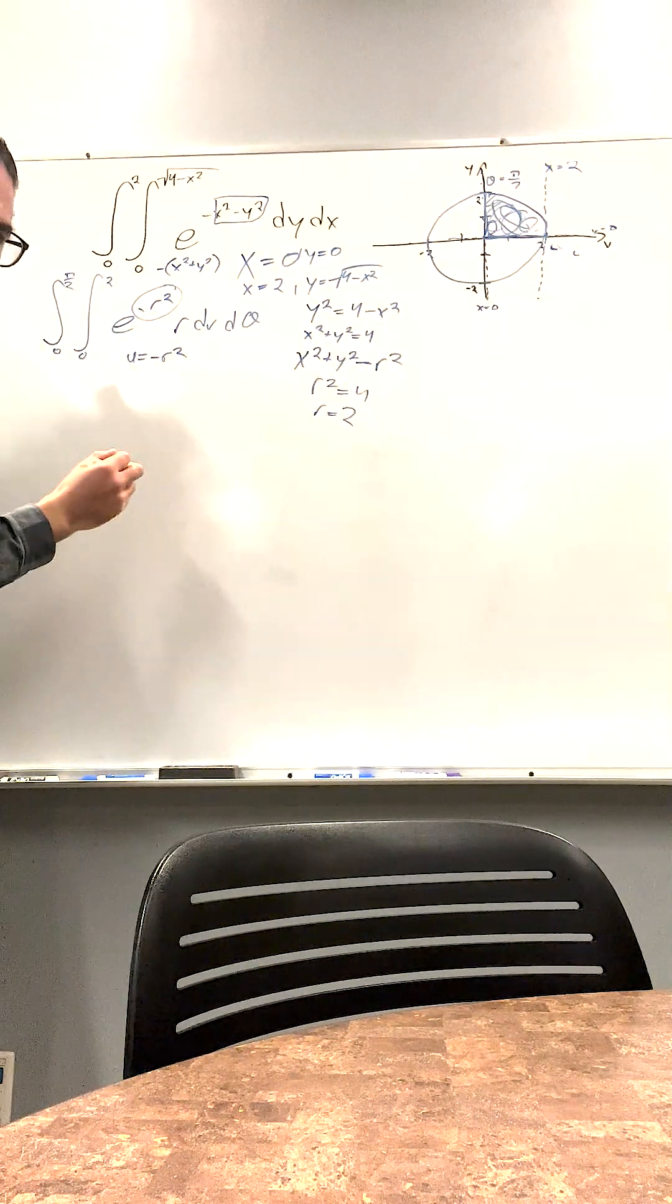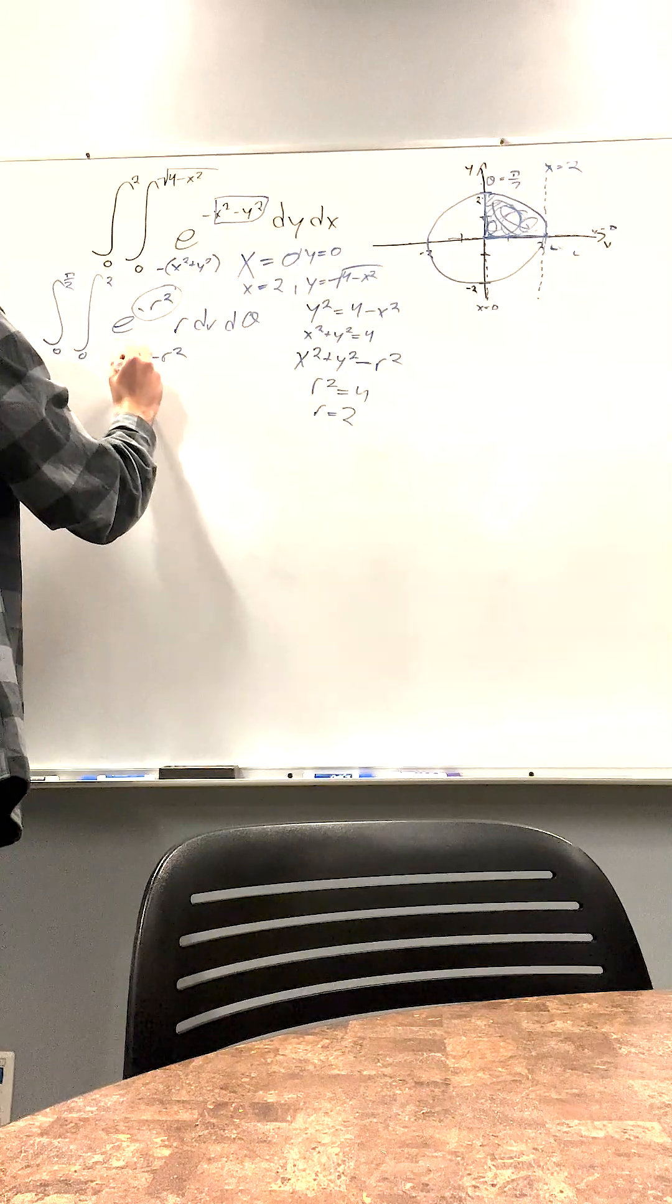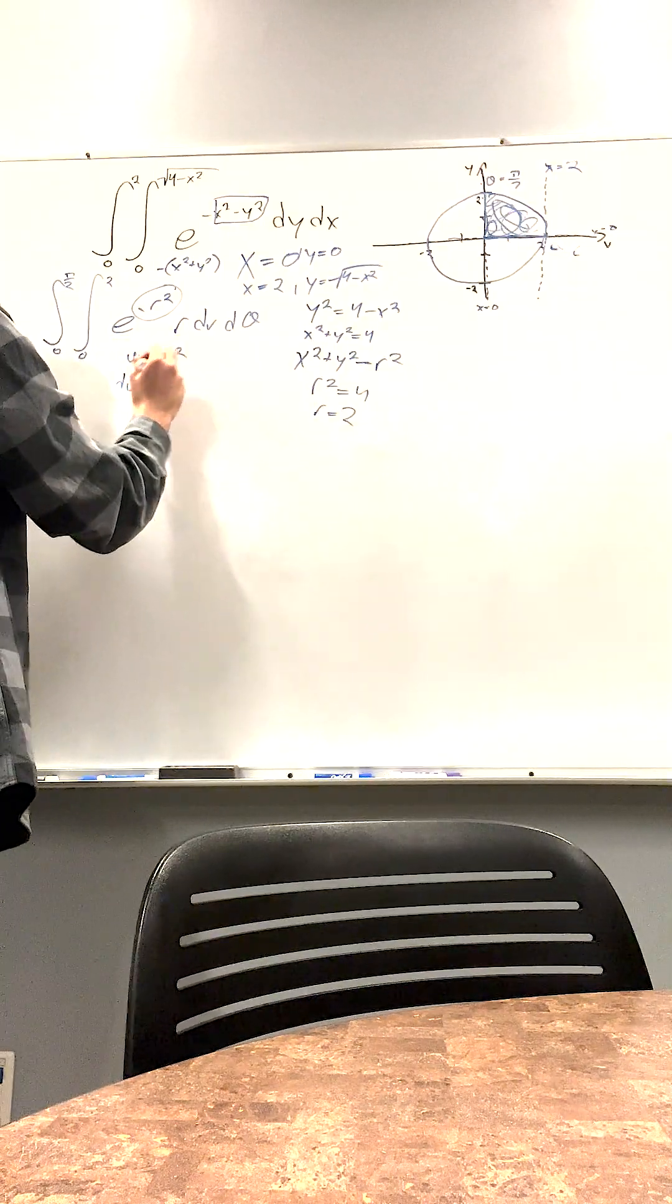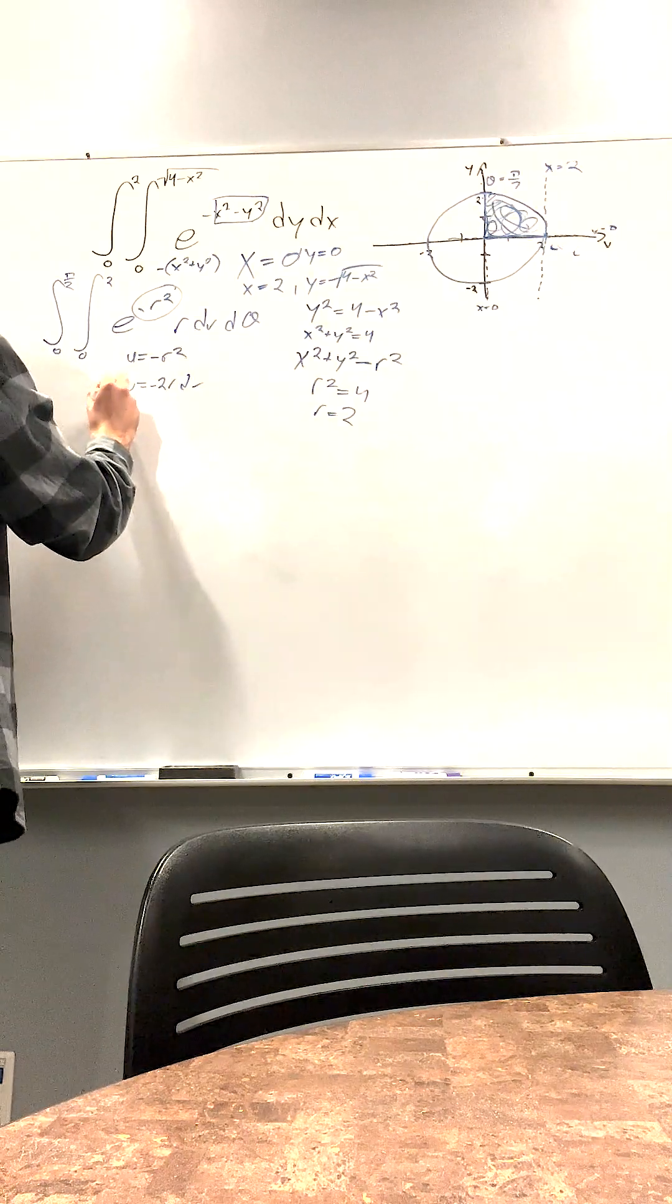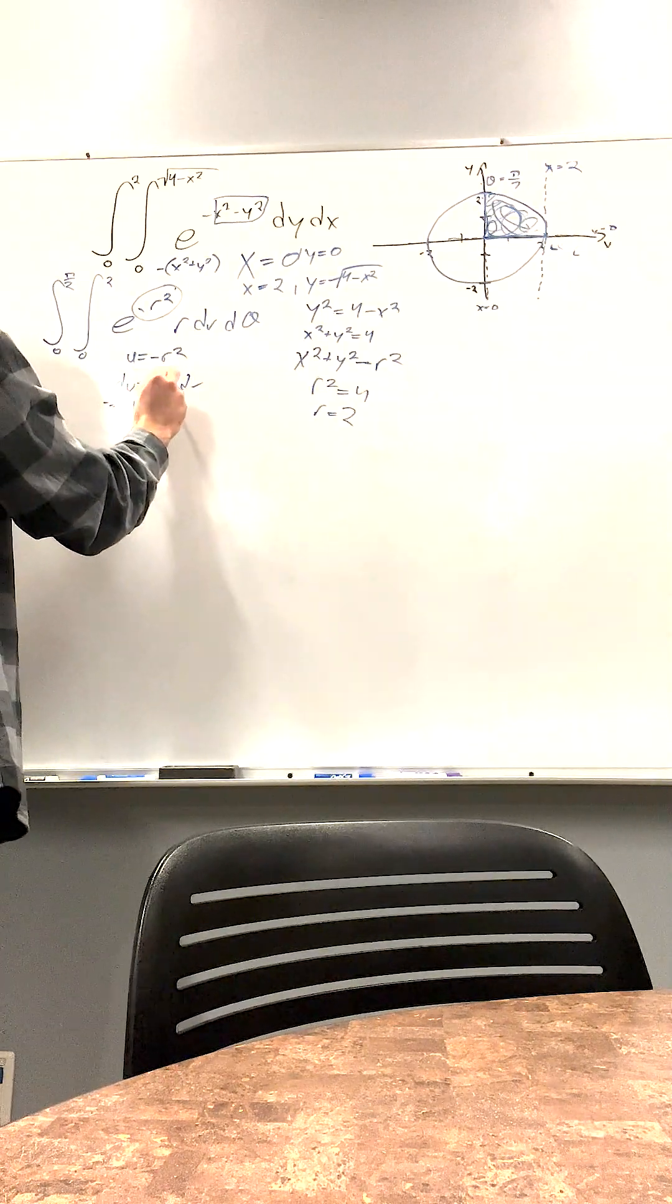This is the negative I forgot last time. You have to be very careful with the negatives. du is equal to negative 2r dr, or negative 1 over 2 du is equal to r dr.